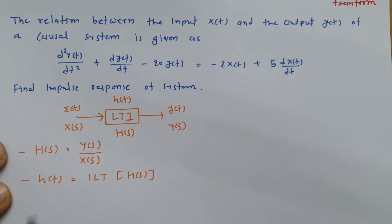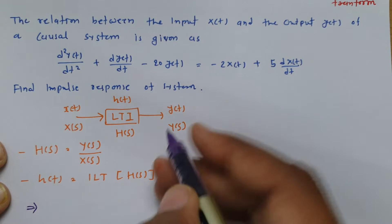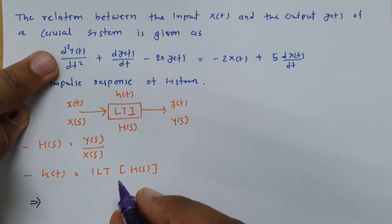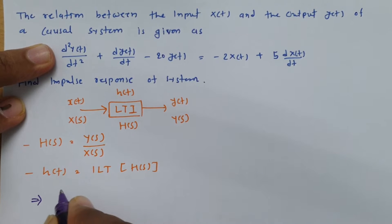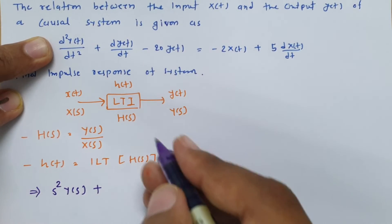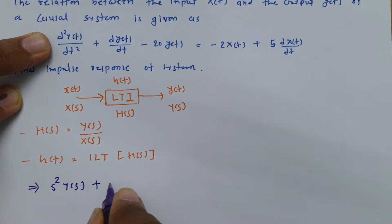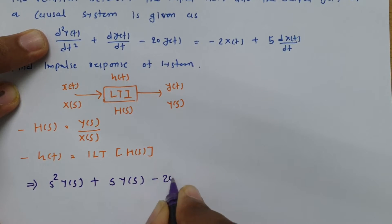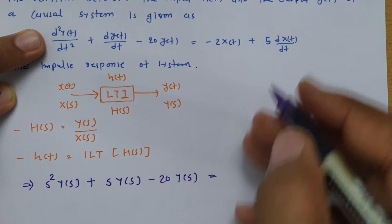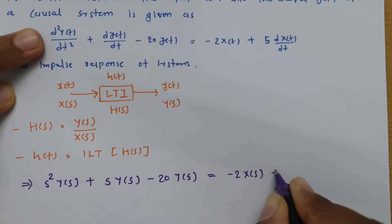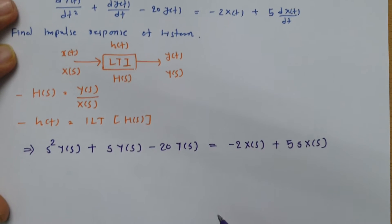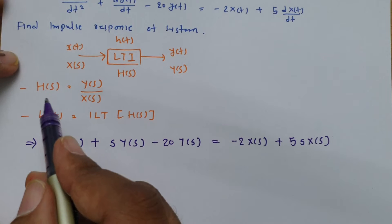We have the differential equation. Taking the Laplace transform of it: the term d²y(t)/dt² involves two differentiations, so its Laplace transform is s²·Y(s). The term dy(t)/dt gives s·Y(s), and the term −20·y(t) gives −20·Y(s). On the right-hand side, −2x(t) becomes −2·X(s), and 5·dx(t)/dt becomes 5s·X(s). So the transformed equation is: s²·Y(s) + s·Y(s) − 20·Y(s) = −2·X(s) + 5s·X(s).